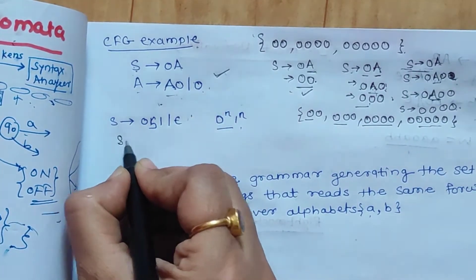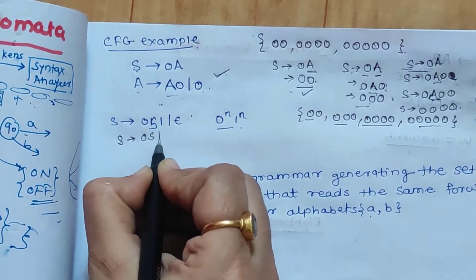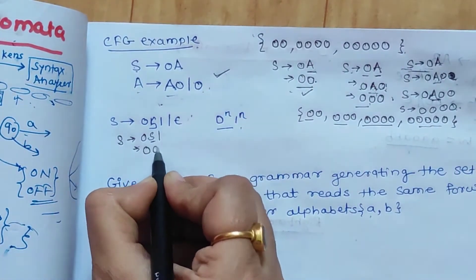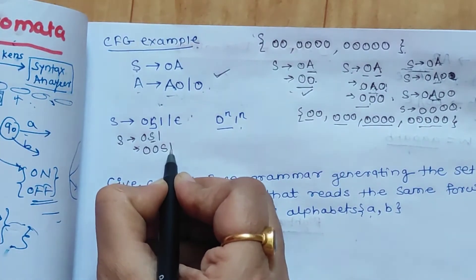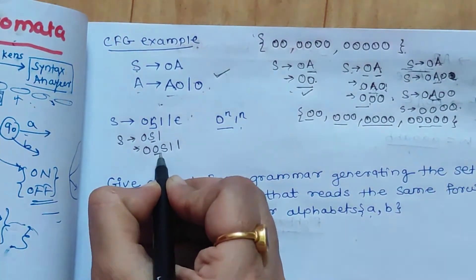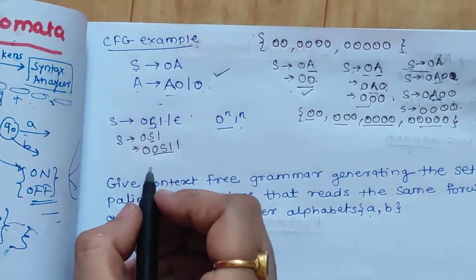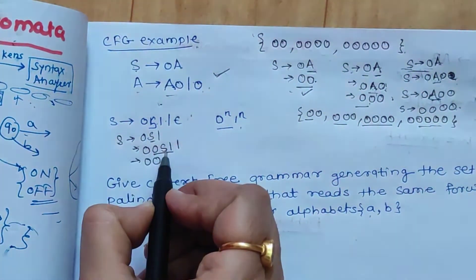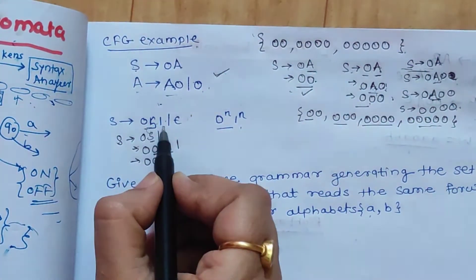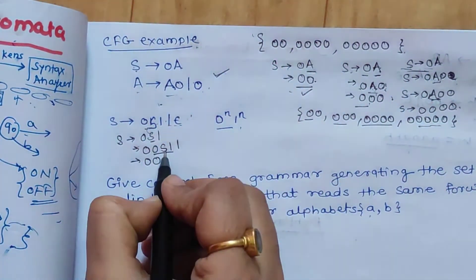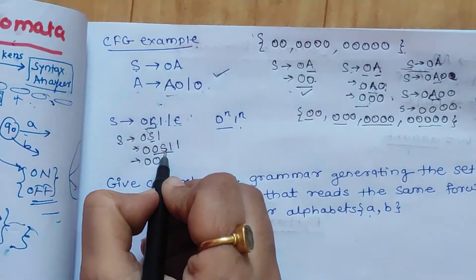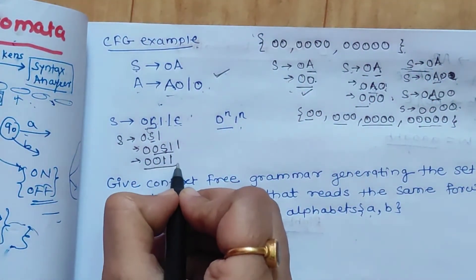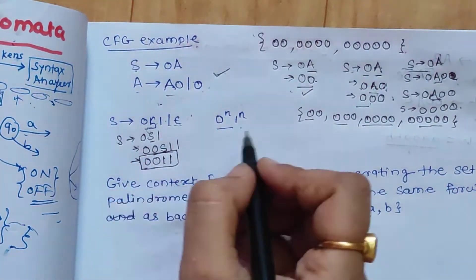First, S gives 0S1. In the next iteration, S is replaced with 0S1 again, giving 00S11. Now S has two possibilities: 0S1 or epsilon. Replacing S with epsilon — which is nothing — gives the string 0011. This kind of string is generated by this grammar.